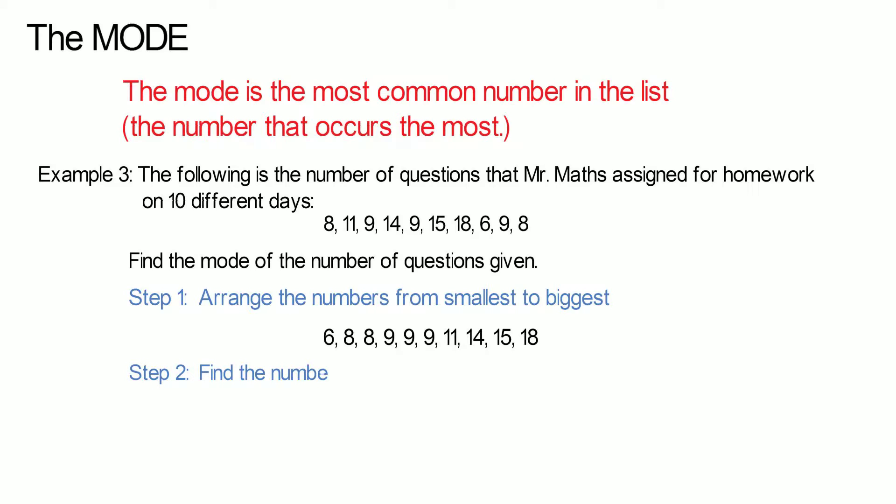Step 2: Find the number that occurs the most. In this example, 9 occurs the most, namely 3 times. Therefore, the mode is 9.